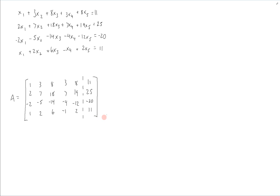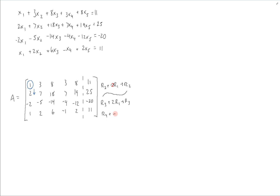Now we have to row reduce this. We're going to look at the top left position — that will be our first pivot position — and we're going to create zeros below it. We do that by taking row 2 plus negative row 1 to replace row 2, row 3 plus 2 times row 1 to replace row 3, and row 4 plus negative row 1 to replace row 4, giving us this matrix.